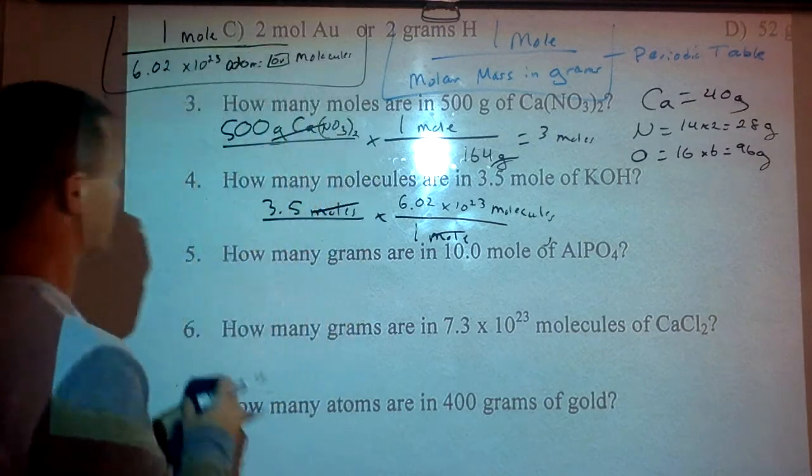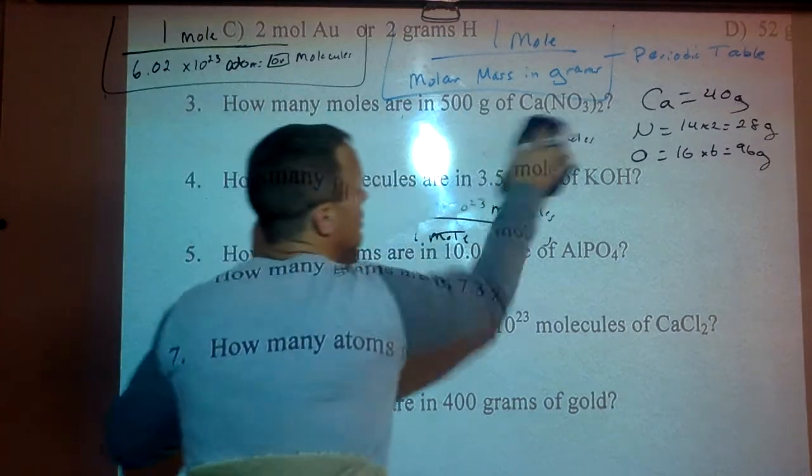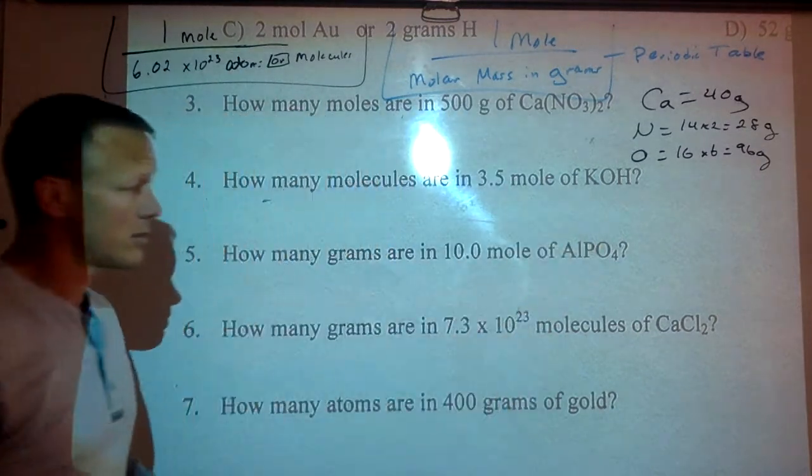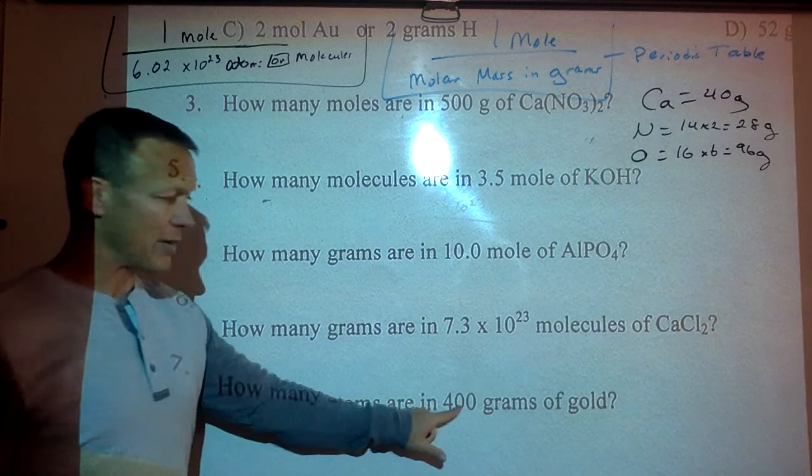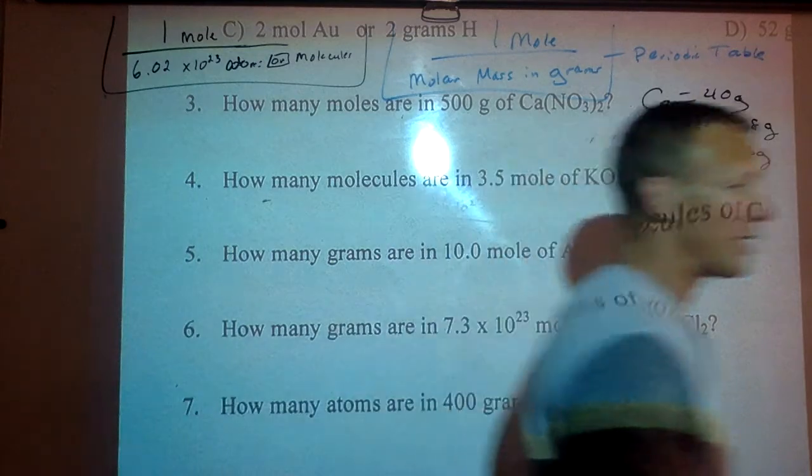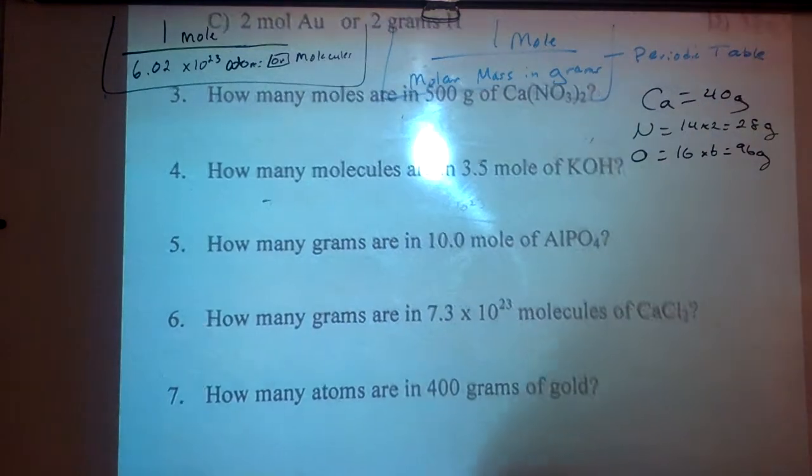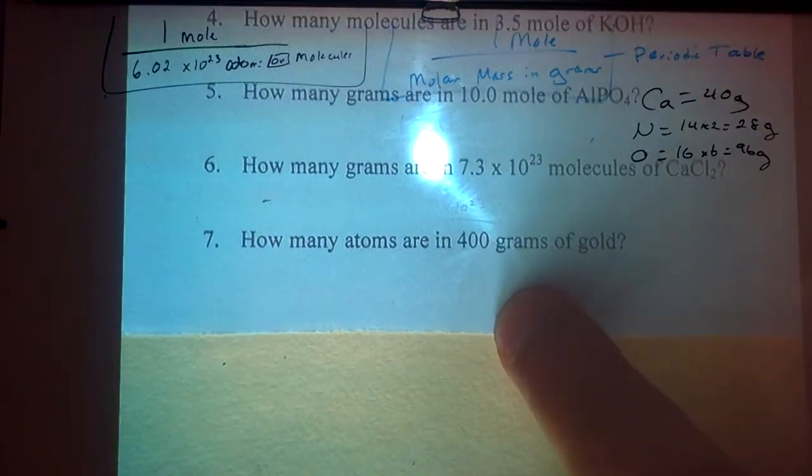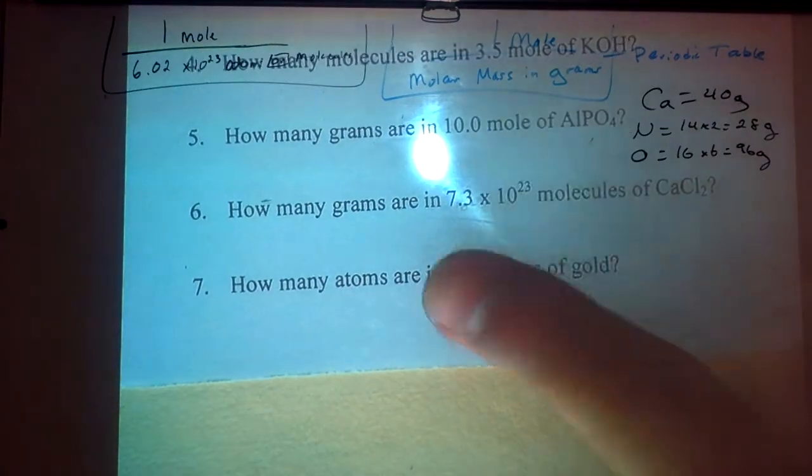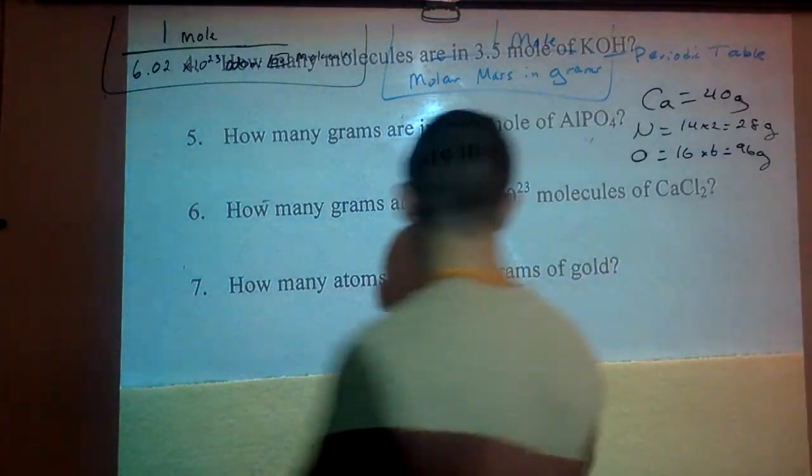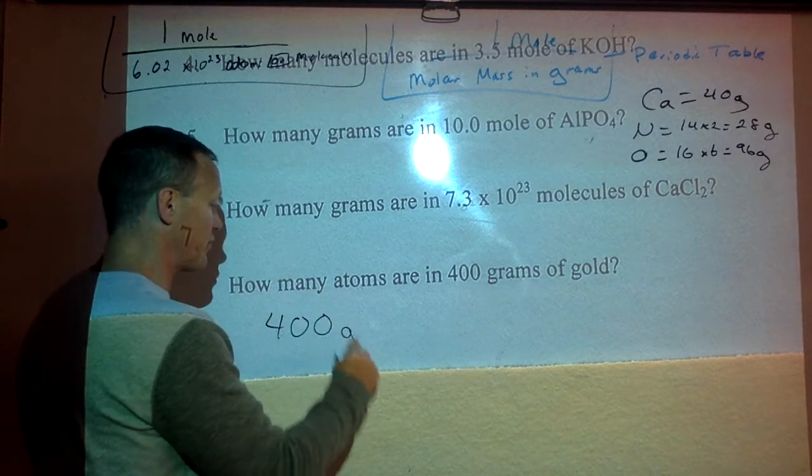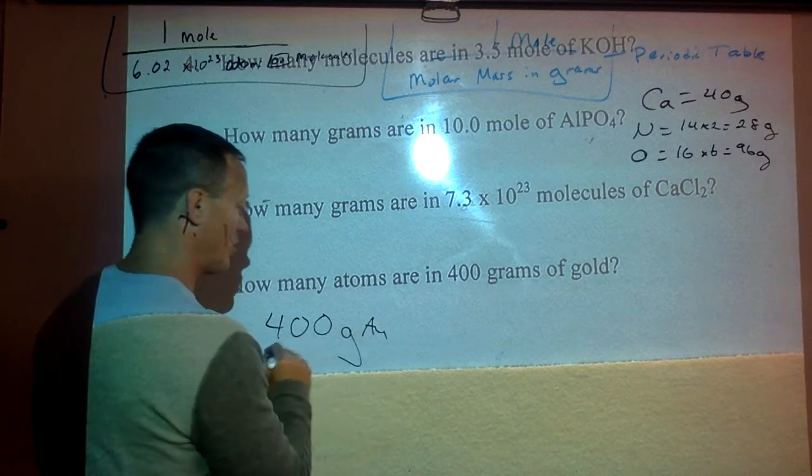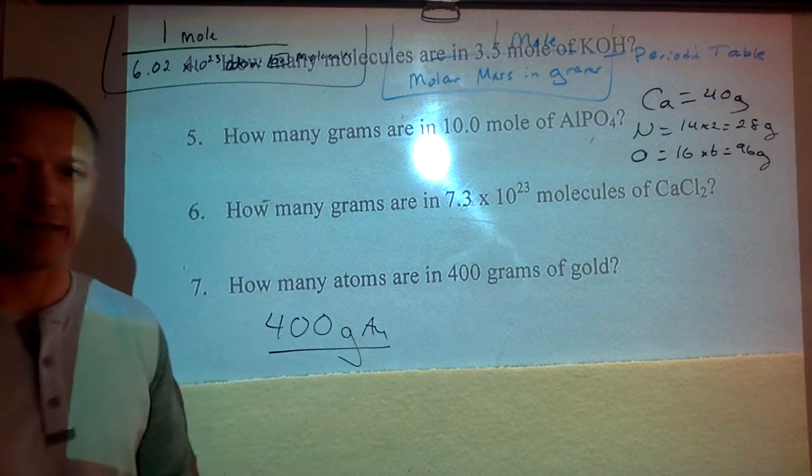I'll do one more problem here. Let's say we have – how many atoms are in 400 grams of gold? So I'm going to get the number of atoms in 400 grams of gold. So start with the thing that's given to you. I have 400 grams of gold. I want to figure out how many atoms would be in that sample.